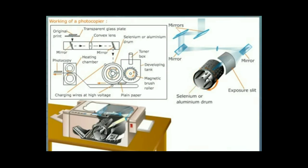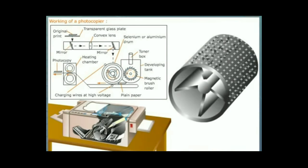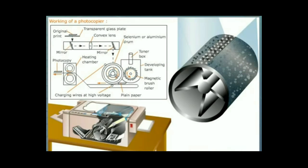Let us see how latent image is formed. If the text on the document to be photocopied is WELCOME, then the seven letters on the document absorb the incident light whereas the blank areas reflect the light. When this reflected light from the blank areas is incident on the positively charged aluminum drum, the corresponding regions on the drum lose their positive charges. And the rest of the positive charges will be arranged as W-E-L-C-O-M-E on the drum.